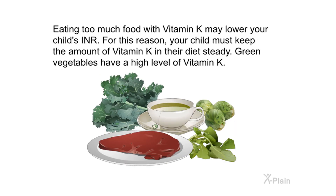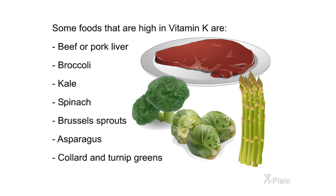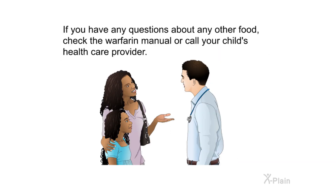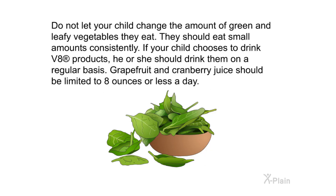Make sure your child's eating and exercise habits stay consistent. Eating too much food with vitamin K may lower your child's INR, so your child must keep the amount of vitamin K in their diet steady. Green vegetables have a high level of vitamin K. Foods high in vitamin K include beef or pork liver, broccoli, kale, spinach, Brussels sprouts, asparagus, and collard and turnip greens. Do not let your child change the amount of green and leafy vegetables they eat — they should eat small amounts consistently.